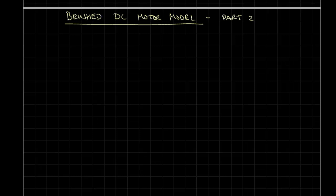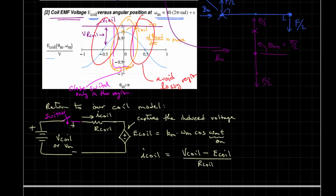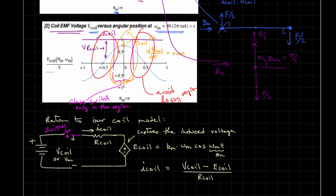In the second lecture, we are going to complete the development of a simple model for our brushed DC motor. Let me start by returning to what we concluded in our last lesson on a brushed DC motor: when the motor shaft is spun at some rate, we produce an induced voltage called E-coil. That coil voltage is sinusoidal and proportional to a constant Km specific to the motor, related to the geometries of the motor, the magnetic field of the permanent magnets, and the number of turns in the coil.